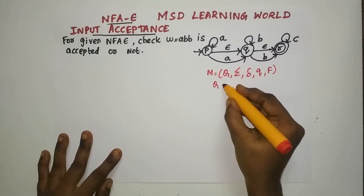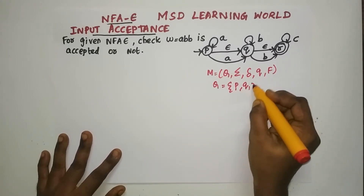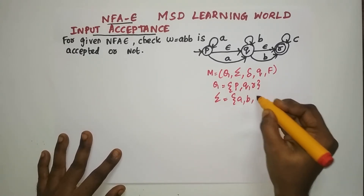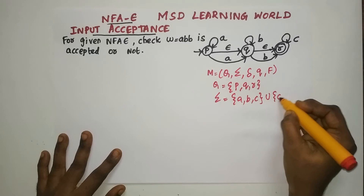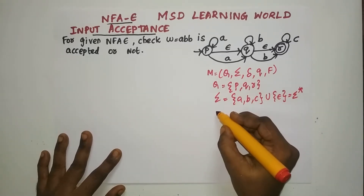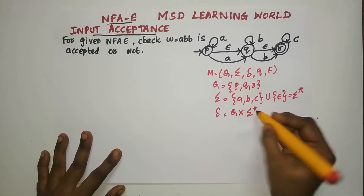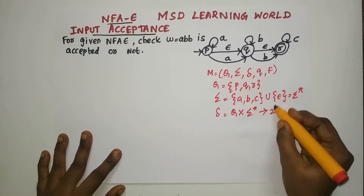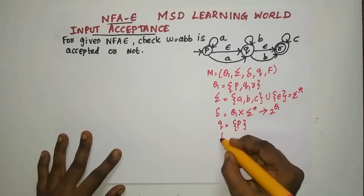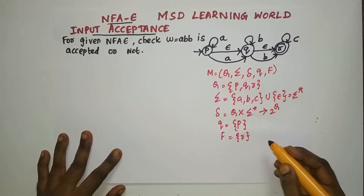Q is nothing but the set of all states: P, Q, R. Sigma is A, B, C union epsilon, which is nothing but sigma star. Delta is nothing but Q Cartesian product sigma star tending to 2 power Q. The initial state is P, and the final state is R. This is what the machine components are.